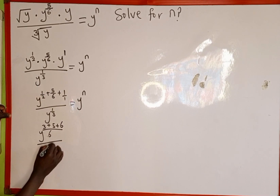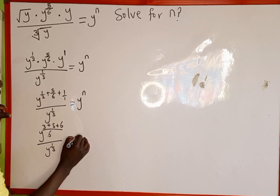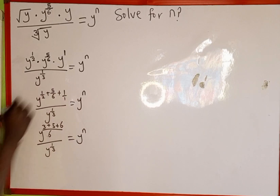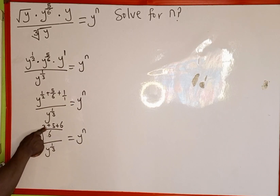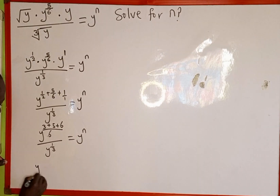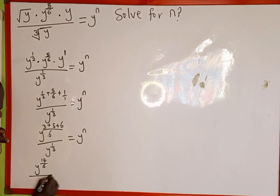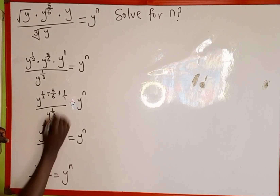Everything all over y raised to the power of 1 over 3, which is equal to y to the power of n. Simplifying: 3 plus 5 is 8, then 8 plus 6 is 14. So this becomes y raised to the power of 14 over 6, divided by y raised to the power of 1 over 3, which is equal to y to the power of n.